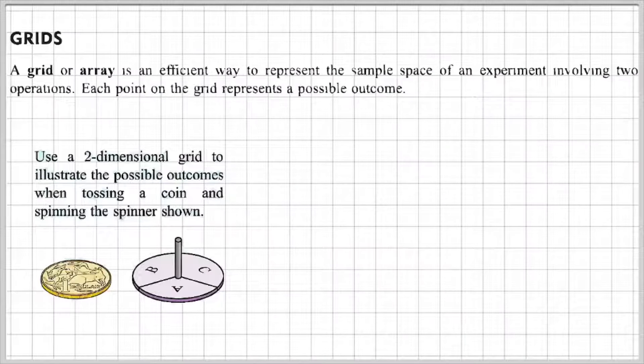Method two is to look at grids. A grid or array is an efficient way to represent the sample space of an experiment involving two operations. Each point on the grid represents a possible outcome. For example, use a two-dimensional grid to illustrate the possible outcomes when tossing a coin and spinning the spinner shown.